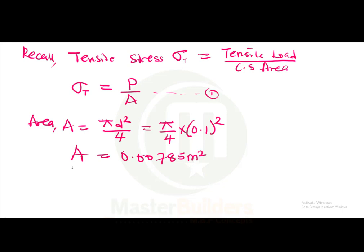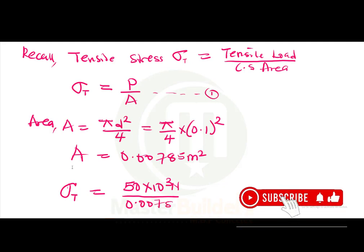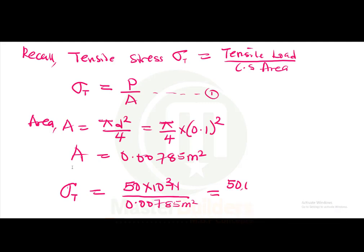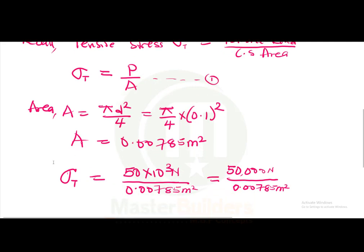So using equation 1, we have that our load is 50 multiplied by 10 raised to the power of 3 newtons all over the area, which is 0.00785 meters squared. By extension, this is given as 50,000 newtons all over 0.00785 meters squared.